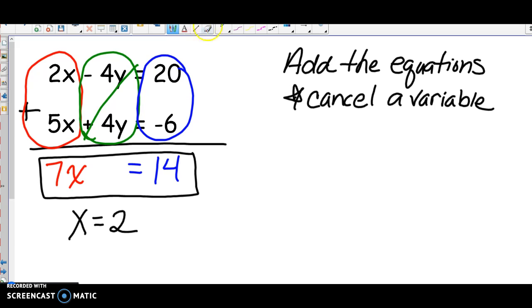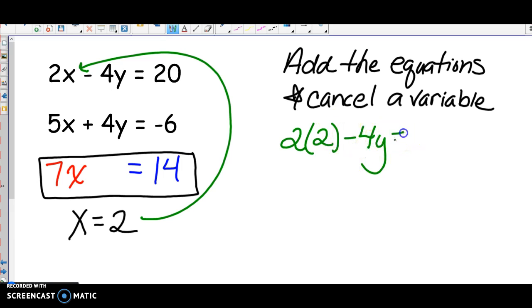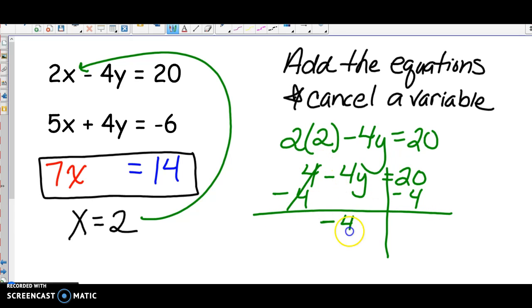Now that I know that x equals 2, I can plug it into one of my original equations. I'm going to pick the first one. Solve: 2 times 2 is 4, minus 4y equals 20. I'm going to subtract 4 from both sides. Those cancel, I get negative 4y equals 16. Divide both sides by negative 4, and I get y equals negative 4. Therefore, my answer is x equals 2 and y is negative 4.